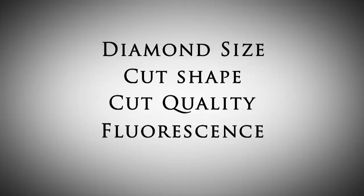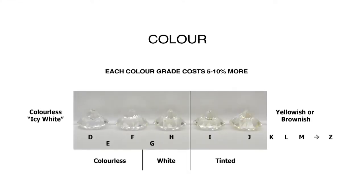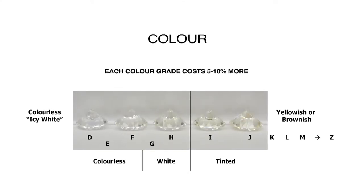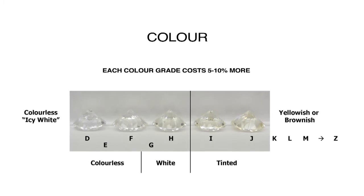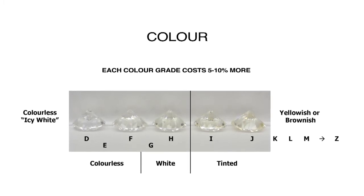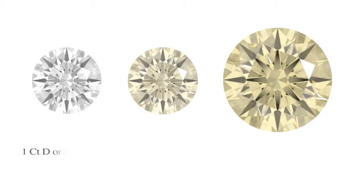The colour of diamonds is graded face down through the back of the stone, but you only see your diamond face up, and there can be quite big differences. It's easy to see that a one carat I coloured diamond is yellowish when compared side by side with a top colourless one carat D, but the bigger the diamond the more obvious the colour becomes.